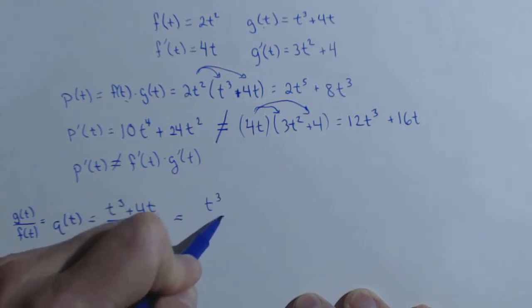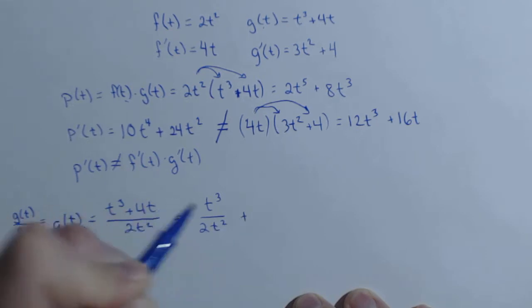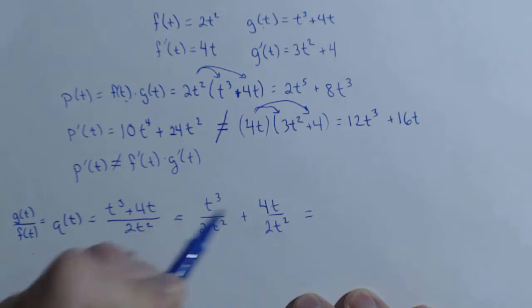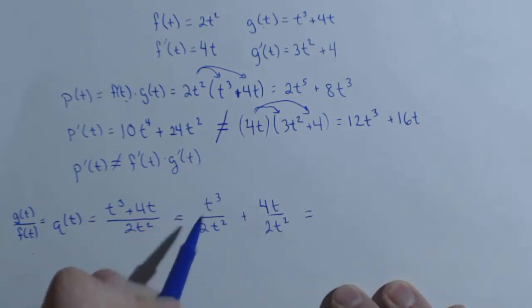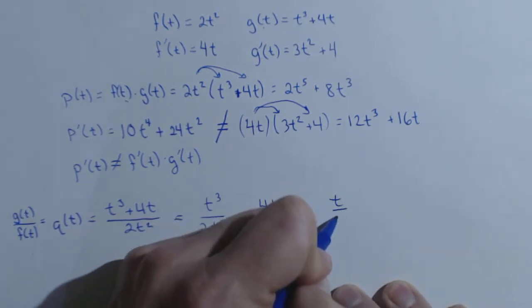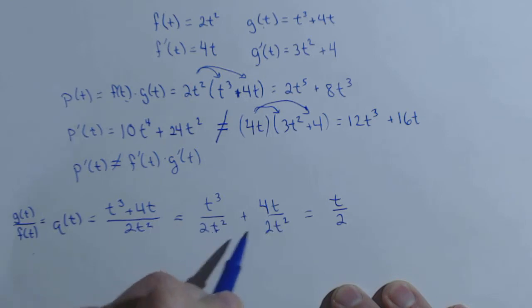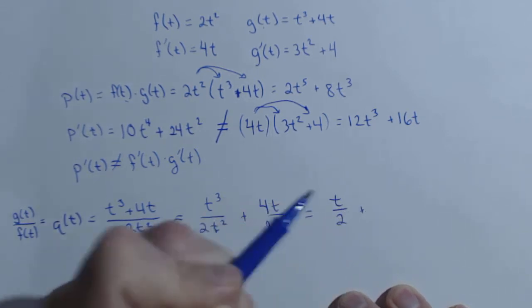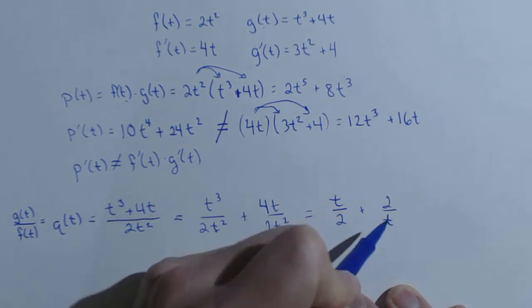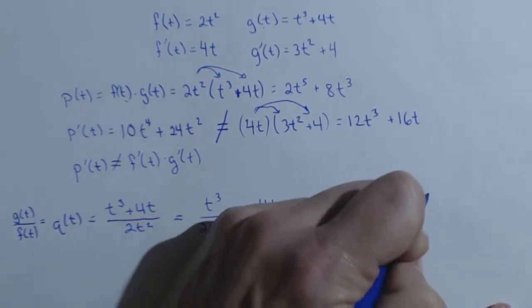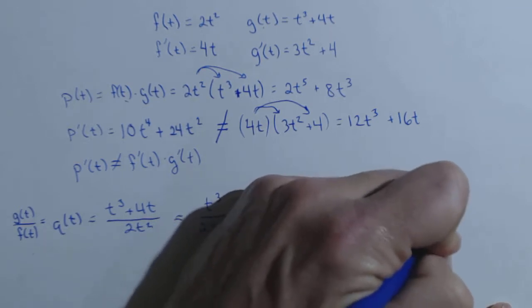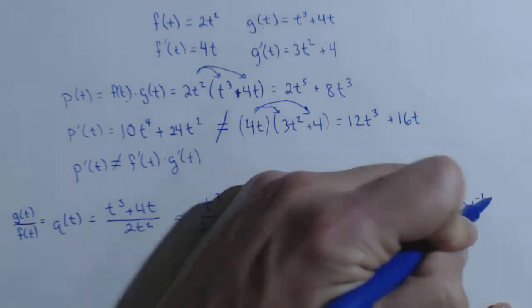Well, to do this derivative, I'm going to split these two pieces up over 2t squared plus 4t over 2t squared and simplify. So I'm going to end up with t over 2 for this piece. And here, I'm going to end up with plus 2 over t. I'm going to go one more step and rewrite those as power functions: t over 2 plus 2t to the minus 1.